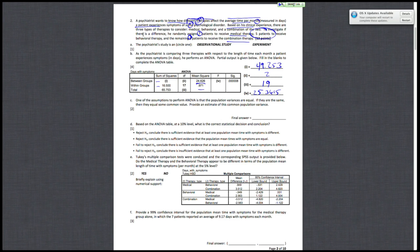Okay, on to letter C, which says that one of the assumptions is that the population variances are equal. And if they are the same, then they equal a common value. Provide an estimate of the common population variance. And note that it's asking for the common population variance as opposed to standard deviation. And just as a reminder, variance equals your standard deviation squared.